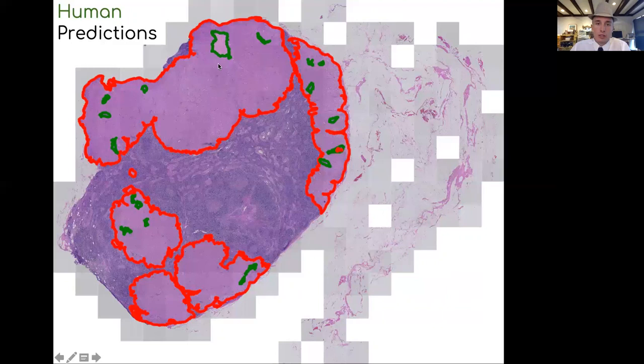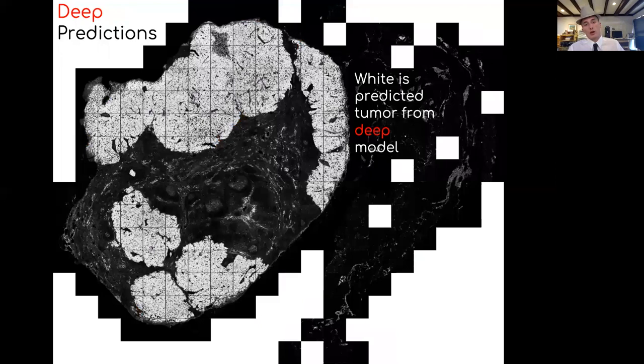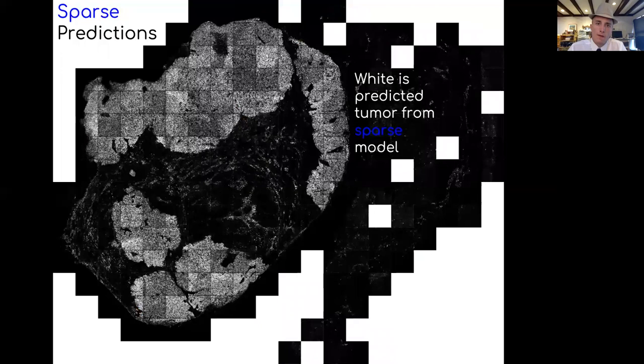You can see up here this island is correctly identified. Next I'm going to show you my deep model's predictions for this slide. You can tell this looks pretty good, it's actually matching the ground truth very well. And next is the sparse model prediction - again, it's matching the predictions very well. So both models are doing really good, they're doing pretty much equally good it looks like.